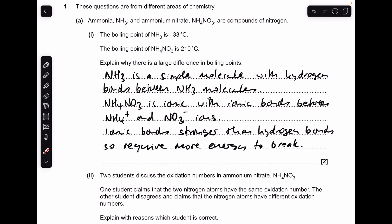So there's my answer to part A. I'll just quickly run through it. We've got to talk about the different types of structures these things have. Ammonia is a simple molecule with hydrogen bonds between NH3 molecules. Whereas ammonium nitrate is an ionic compound with ionic bonds between the ions. All you've got to do is get across the relative strength of the two bonds. Ionic bonds are stronger than hydrogen bonds and therefore they're going to need more energy to break.